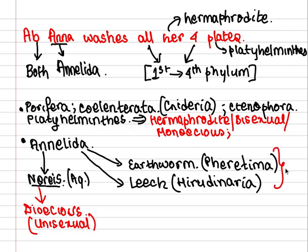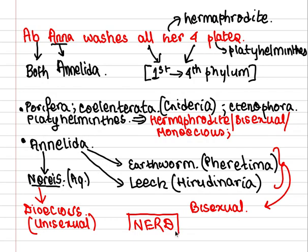Earthworm and leech are bisexual. How will you remember this? Using one single word: 'NERD' — N-E-R for Nereis, D for dioecious. In schools there are nerds who are very good in studies — so from that you can learn 'NERD': Nereis is dioecious, and the other two (earthworm and leech) are bisexual, hermaphrodite, or monoecious.